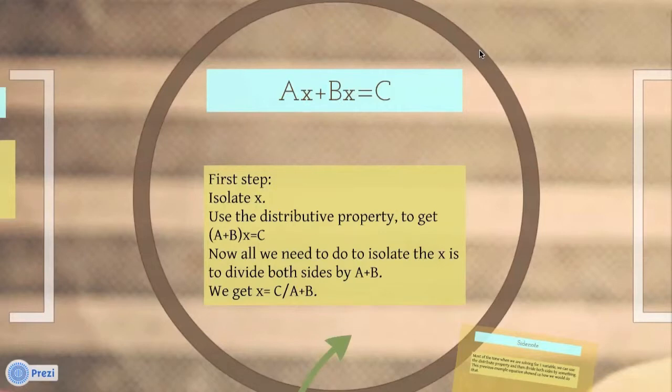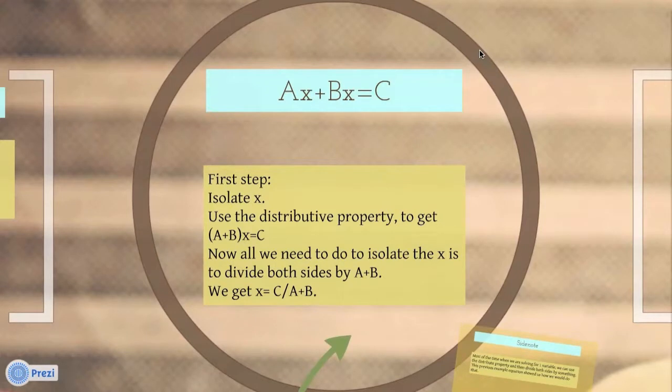ax plus bx equals c. The first step, isolate x. Using the distributive property, get a plus b times x equals c.